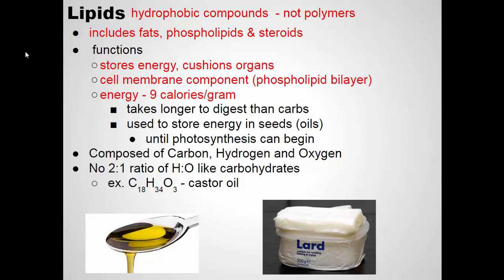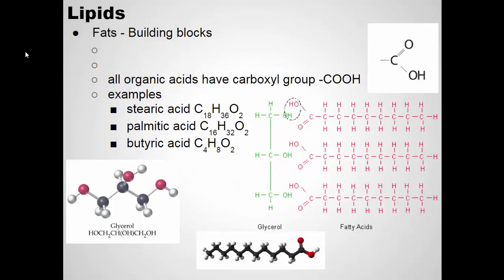This is animal lard — that's another lipid. It's a solid fat, a saturated fat, used in cooking and baking. Lard is animal fat. So lipids, or sometimes we call them fats, are made of two components: one glycerol molecule — shown in green in your notes — that's a three-carbon molecule.